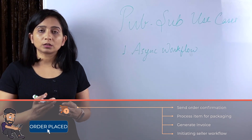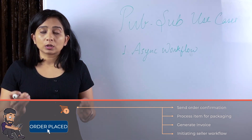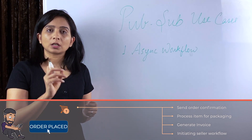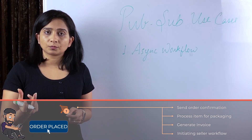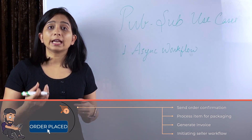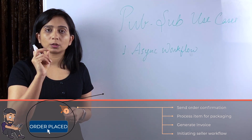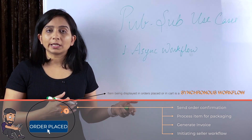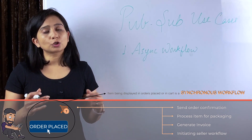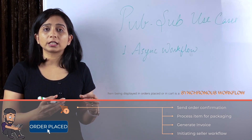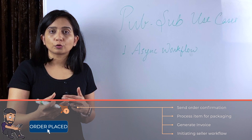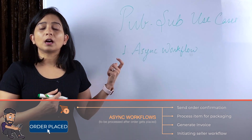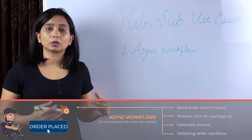These are all examples of workflows. Now some workflows have to happen instantaneously — for example, as soon as the customer clicks 'Add to Cart', that item should appear in the cart synchronously. But once an order is placed, it is okay for the system to handle workflows like generating the invoice or contacting the seller for payout in the background.